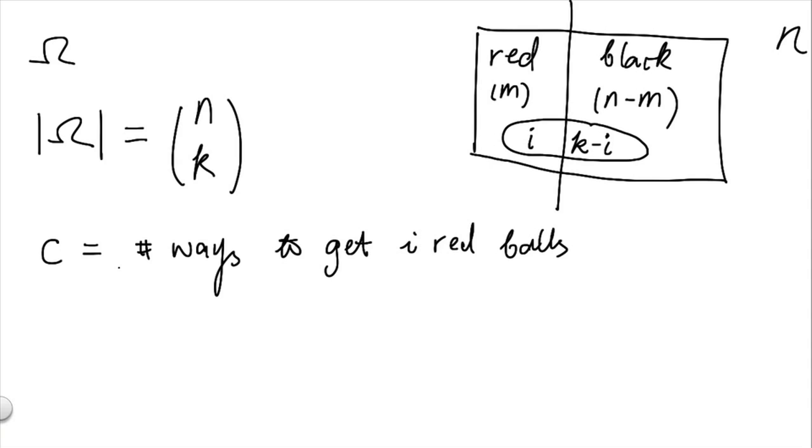Next, we'd like to know how many of those samples correspond to the event that we're interested in. In particular, we'd like to know c, which is equal to the number of ways to get i red balls after we draw the k balls. To do so, we'll break c into a product of two numbers, let's call it a times b.